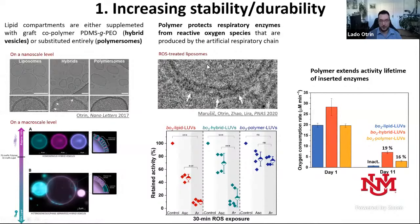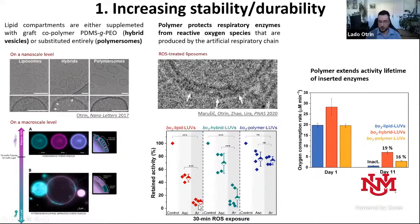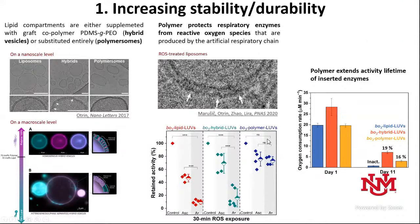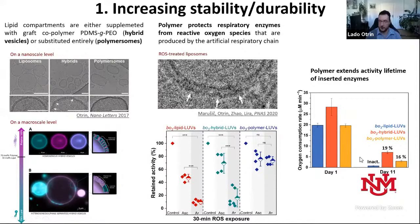We checked whether the polymer protects respiratory enzymes against reactive oxygen species. Cryo-EM images show a lipid membrane that reacted with ROS — the indents are damage down to the lipid bilayer, after which enzymes are removed and the module becomes inactive. Treating lipid vesicles with ascorbate or ascorbyl-free radical causes almost all respiratory enzyme activity to be lost. In hybrid vesicles, ascorbate has essentially no effect, though ascorbyl-free radical still destroys activity. In pure polymer vesicles, almost all activity is preserved, and after 11 days, activity was prolonged in hybrid and polymer vesicles while lipid vesicles were completely inactive.